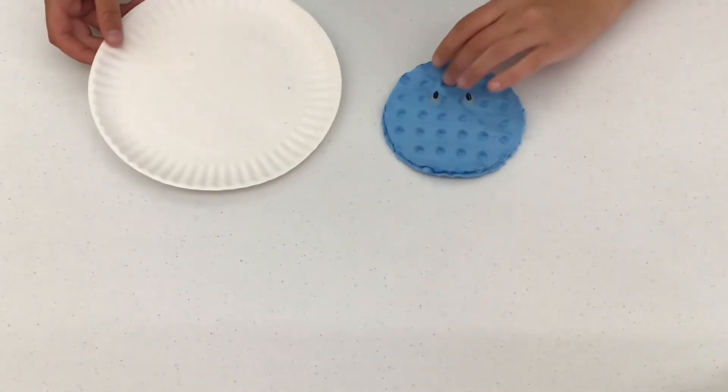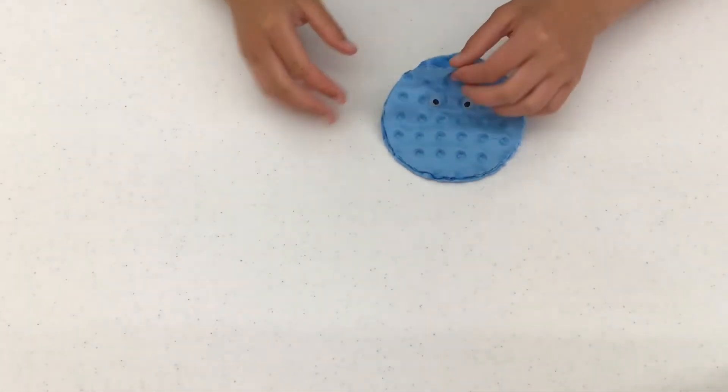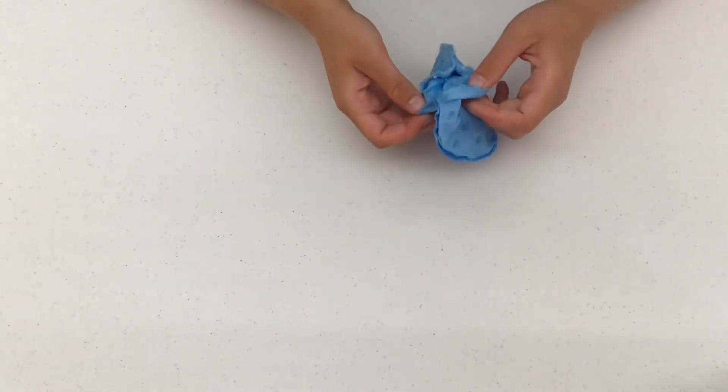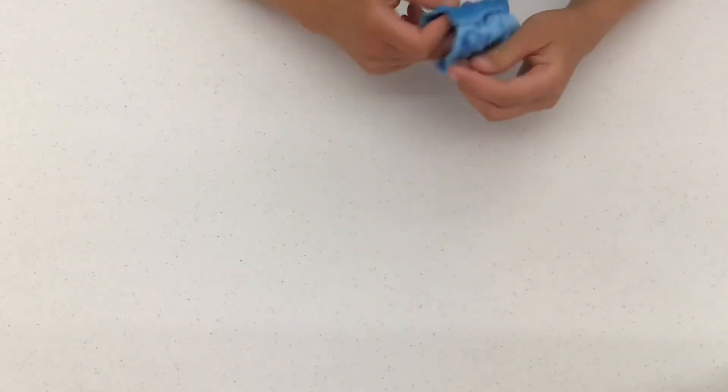Once you've glued almost all the way around your Worry Pet, you're going to want to leave it dry for one to two minutes just to make sure that the hot glue sets. Then flip your Worry Pet right side out and clean up the edges with your finger.